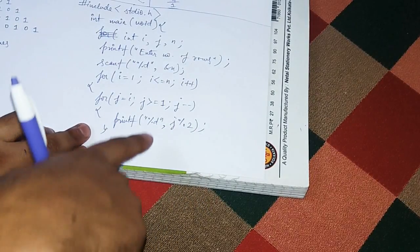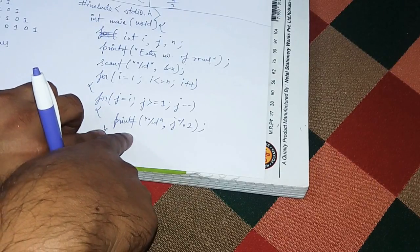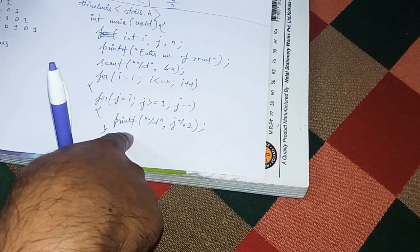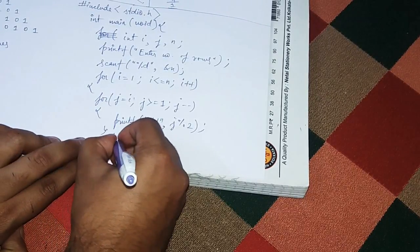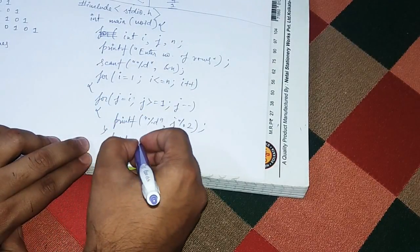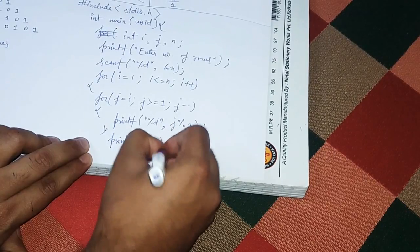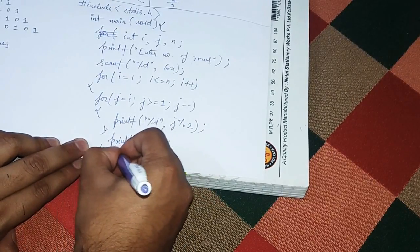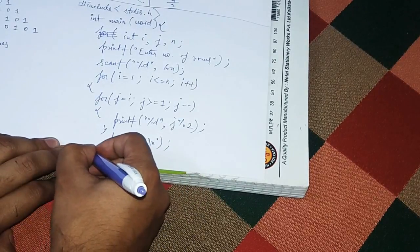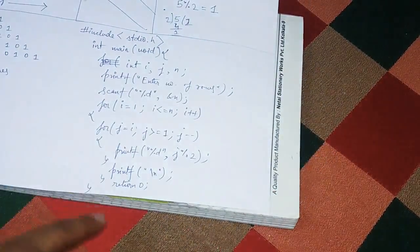After the j loop closes and before the i loop closes, we need to bring the cursor to the next line, so we write printf backslash n. Then we write return 0 and close the main function. Now let me explain what we have done in this j loop.